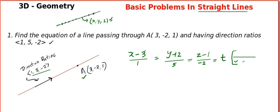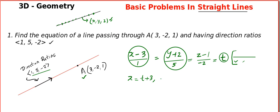If you want to convert Cartesian form into parametric form, it is very easy. All you do is equate the quantity with x to the variable t, then equate the quantity with y to t and z to t. You are going to get x equals t plus 3, y equals 5t minus 2, and z equals minus 2t plus 1. Soon we will be learning very complex problems in 3D like cylinder, cone, etc., and at that point you will understand the importance of this parametric form.